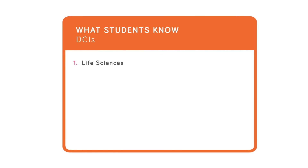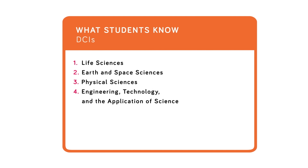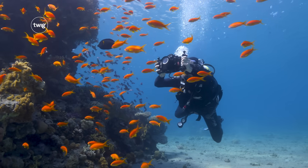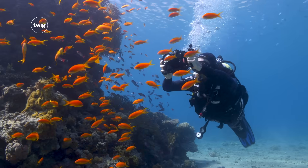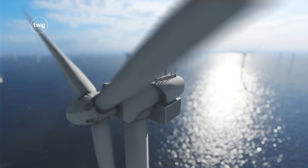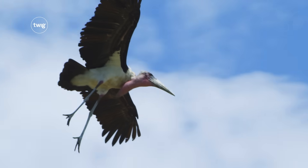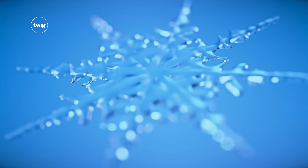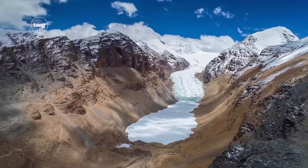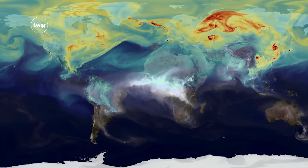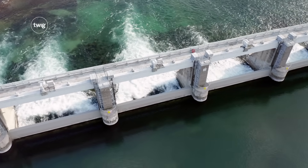They are the fundamental ideas that are necessary for understanding a science discipline, or have broad importance across multiple disciplines. DCIs are what we might also call content knowledge. Simply put, they are the big ideas that students need to know to be able to understand the world around them.